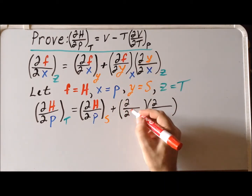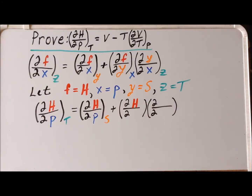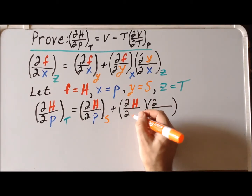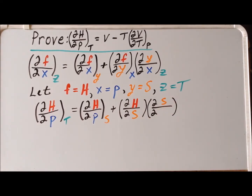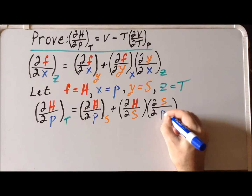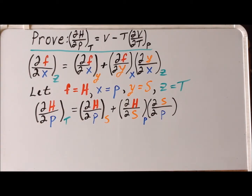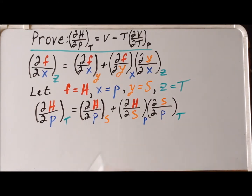Again, our function is going to be the enthalpy H. Our variable x is the pressure. And then we make the proper assignments, and now we have a legitimate mathematical relationship based upon the identity involving partial derivatives.